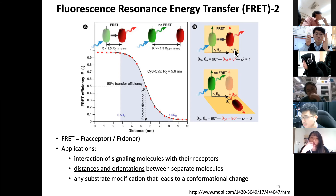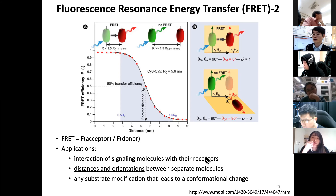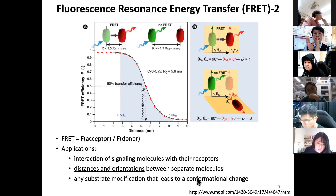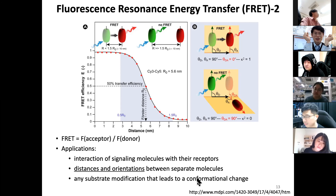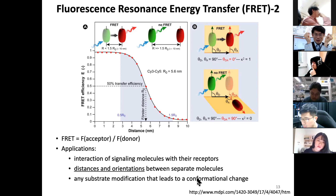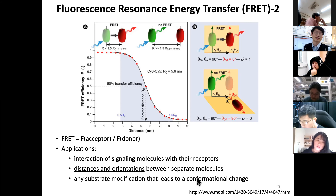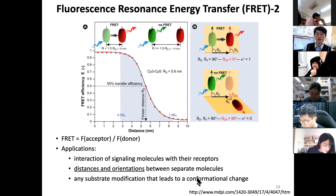FRET is not only determined by distance — the orientation between the two molecules also affects it. Applications include studying the interaction of signaling molecules with their receptors, measuring distances and orientations between molecules, and detecting conformational changes. For example, similar to GCaMP, you can attach a donor here and an acceptor there on the same molecule, and when it undergoes a conformational change, the FRET goes on and off — this allows single-molecule studies of, say, RNA polymerase or DNA polymerase activity.